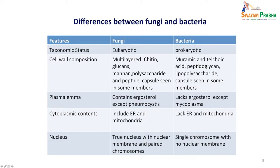When we differentiate between bacteria and fungi, bacteria are prokaryotic while fungi are eukaryotic. Fungi have multilayered cell walls with chitin, glucans, mannan, polysaccharide, and peptide capsules seen in some members, while muramic acid and peptidoglycan are seen in bacteria. Lipopolysaccharide capsules could be seen in some bacteria. The plasma membrane of fungi contains ergosterol, except in Pneumocystis, while bacteria lack ergosterol. Bacteria also lack endoplasmic reticulum and mitochondria, while these are present in the cytoplasm of fungi. Fungi have a true nucleus with a nuclear membrane and paired chromosomes, while bacteria have a single chromosome with no nuclear membrane.